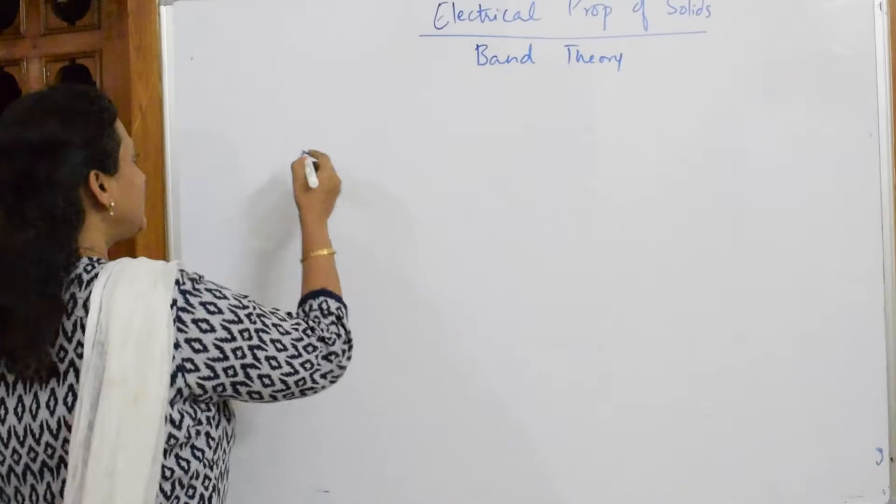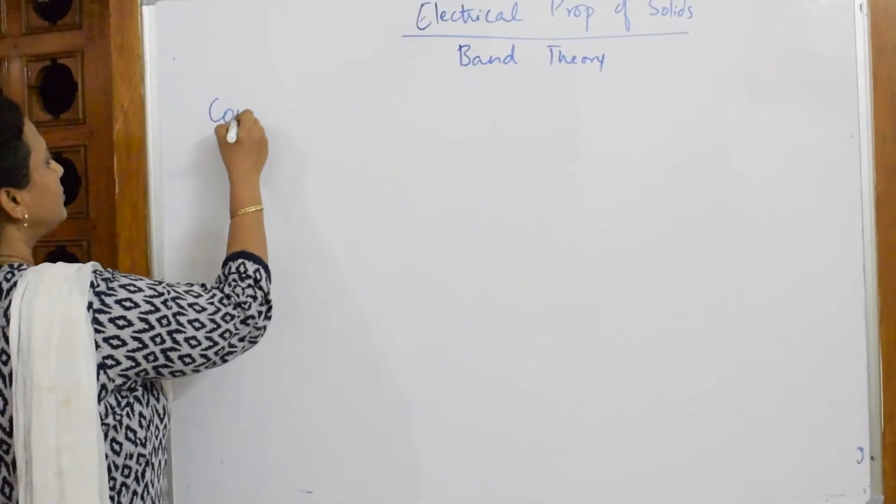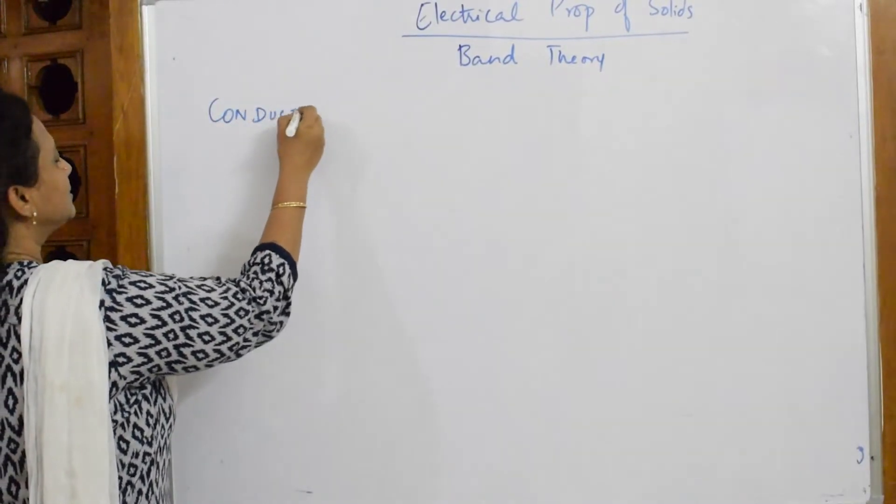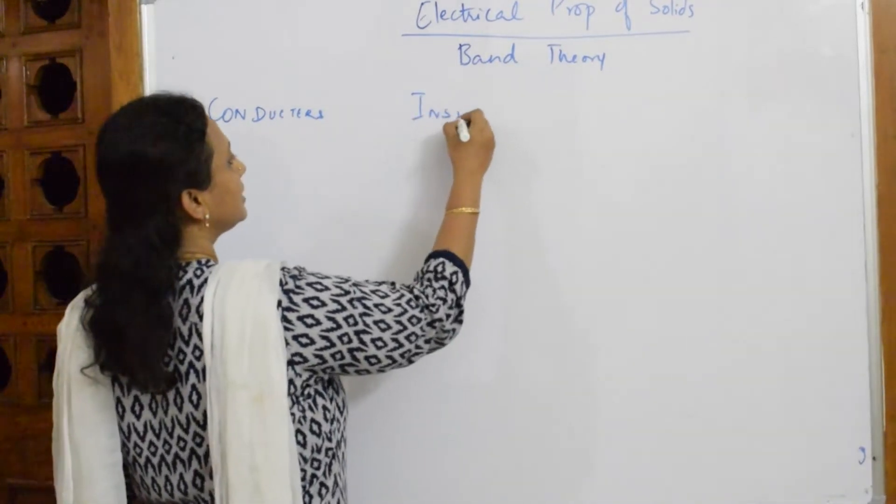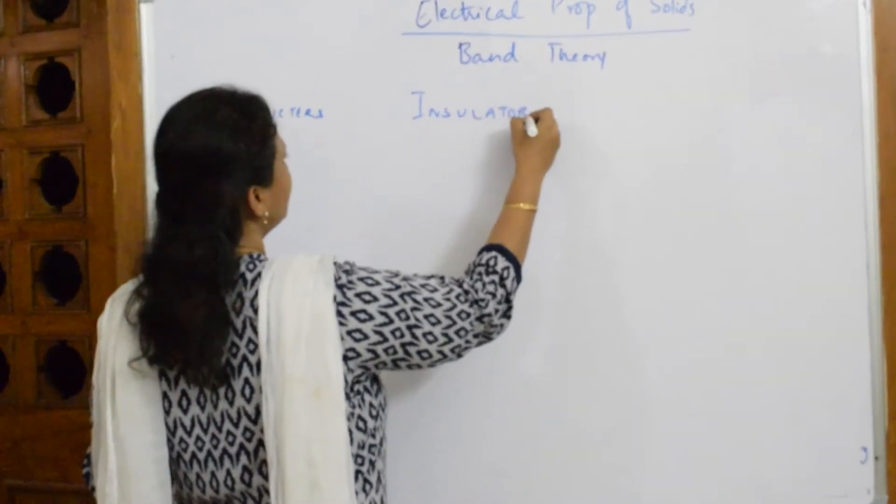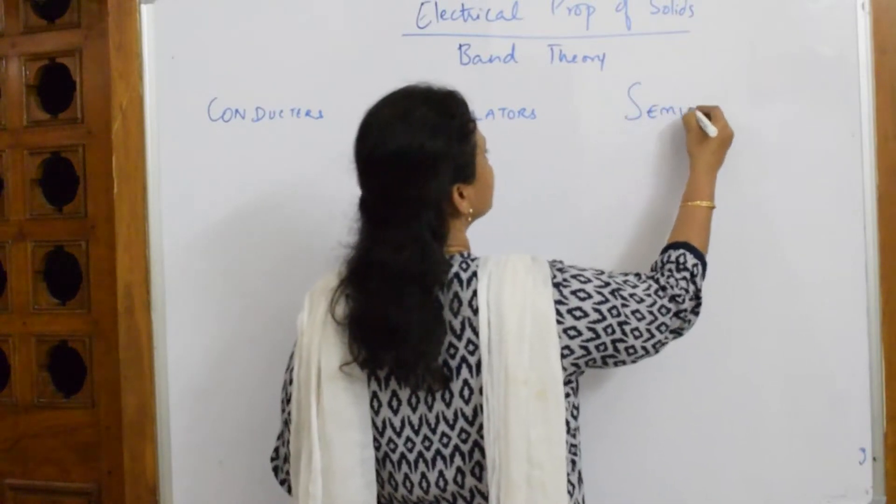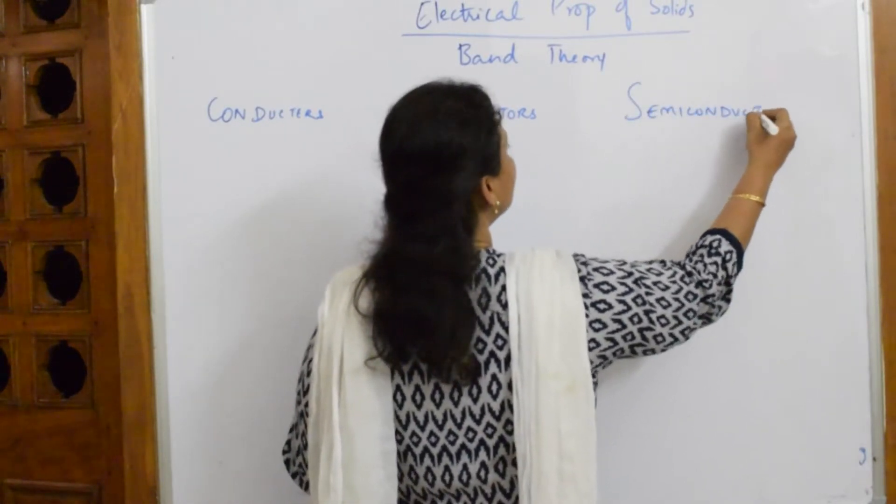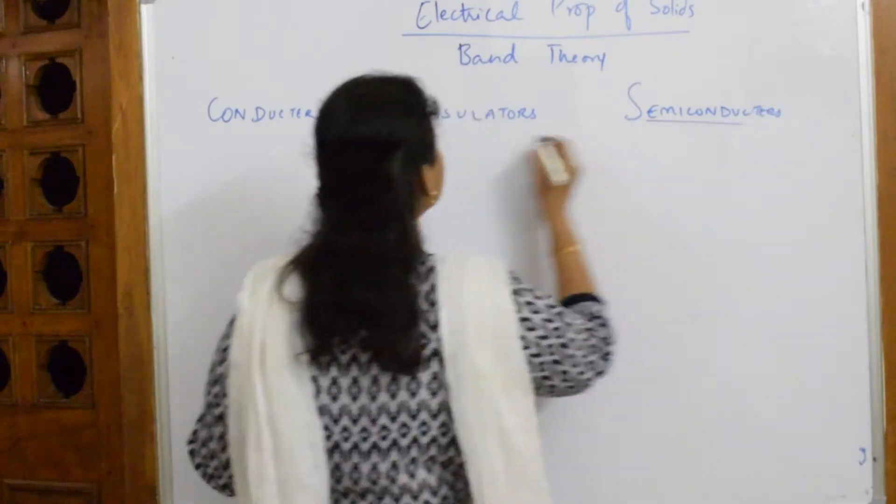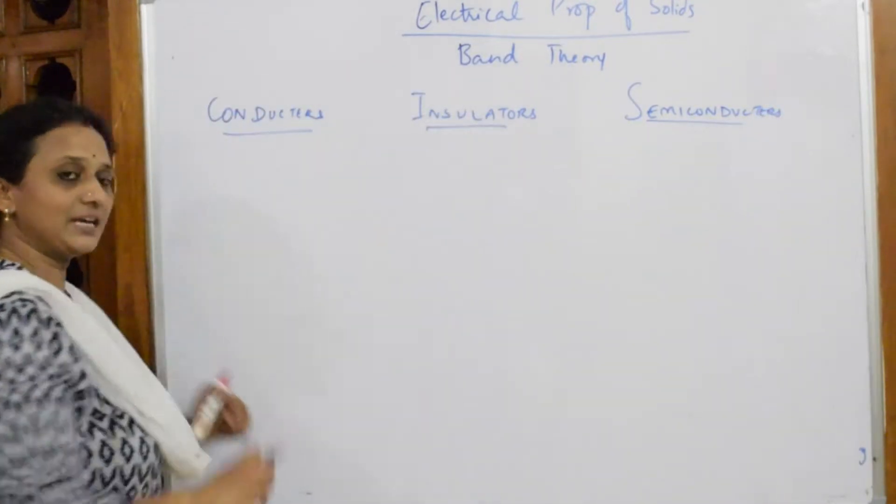We very well know we have three categories. Conductors, insulators, and semiconductors. I am just going in terms of chemistry. Semiconductors. So, conductors, insulators and semiconductors, according to band theory, if I speak.